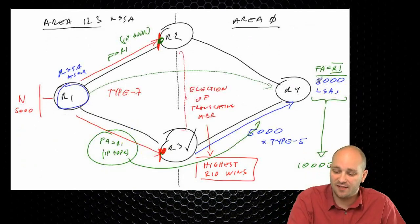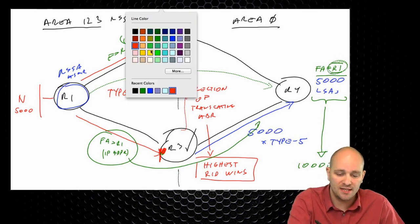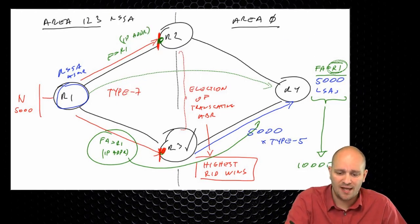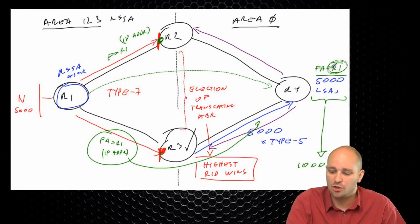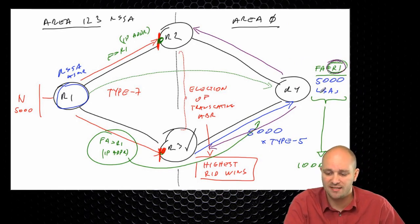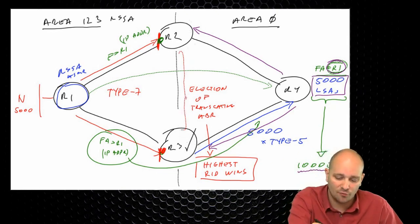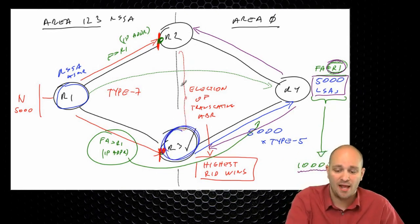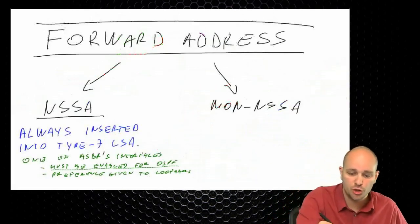R4 now has these 5,000 LSAs and knows they are coming from an IP address of R1. What R4 does is find the best path to reach that forward address. If R4 has two equal-cost paths — one using each interface — then it has two paths to reach those 5,000 LSAs. This is why R4 can have 10,000 routes in its routing table based on information from a single ABR, without requiring duplicate LSA information.